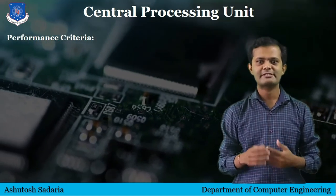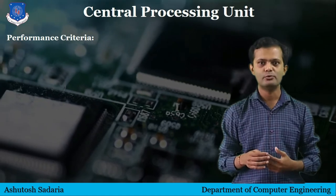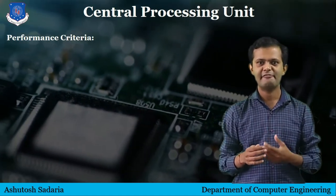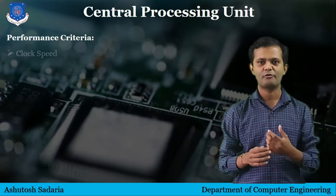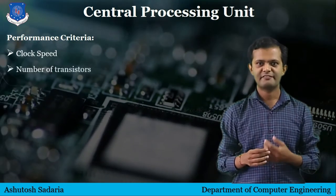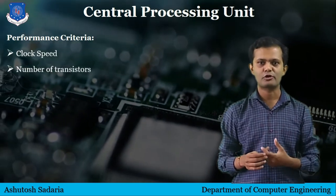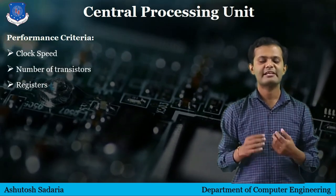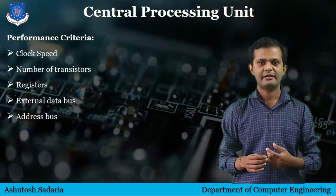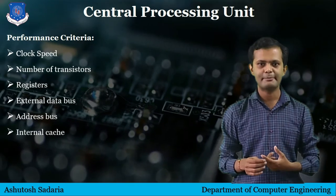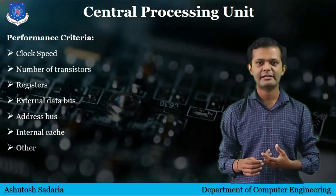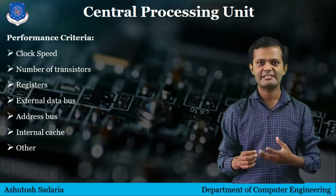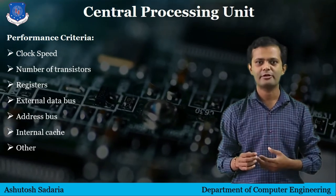Now we will see the performance criteria of your CPU — the criteria by which you can measure the performance of your CPU. These include clock speed, number of transistors, registers, external data bus, address bus, internal cache, and some other components which decide the performance of your CPU.